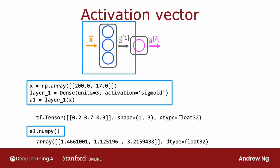Going back to the code for forward propagation in the neural network: when you compute A1 equals layer 1 applied to x, A1 is actually going to be a one by three matrix, because there are three numbers. If you print out A1, you get something like tf.tensor with a shape of 1 by 3. This is TensorFlow's way of saying it's a floating point number — a number that can have a decimal point — represented using 32 bits of memory, which is what float32 means.